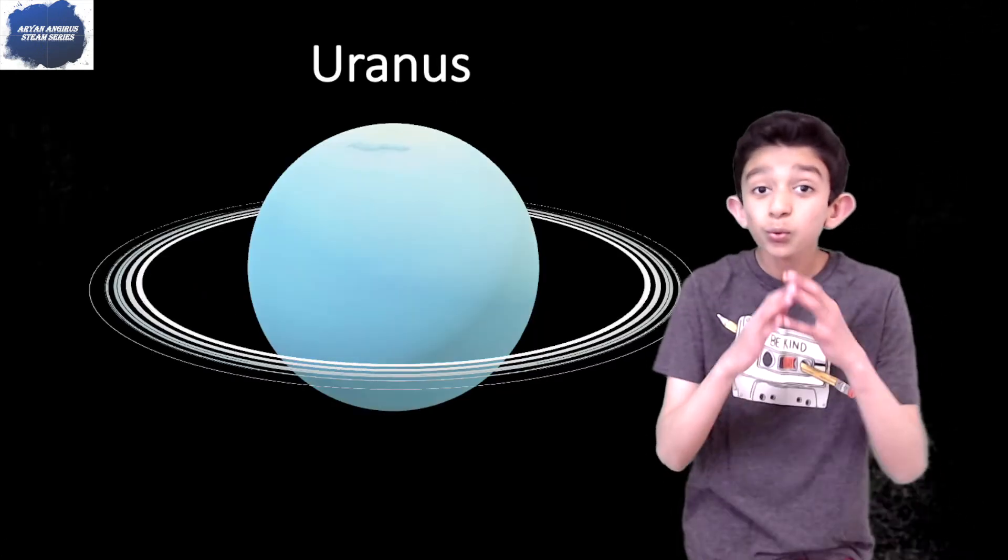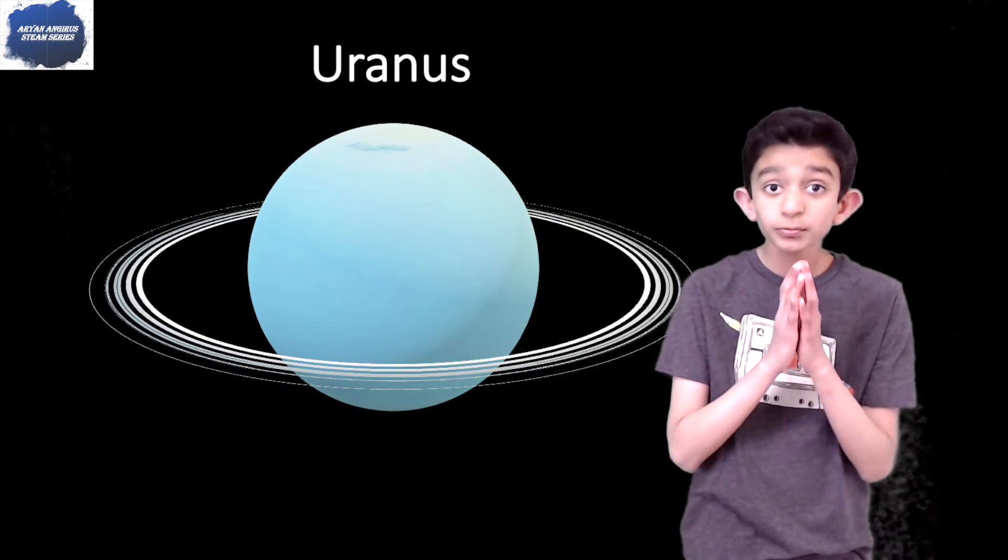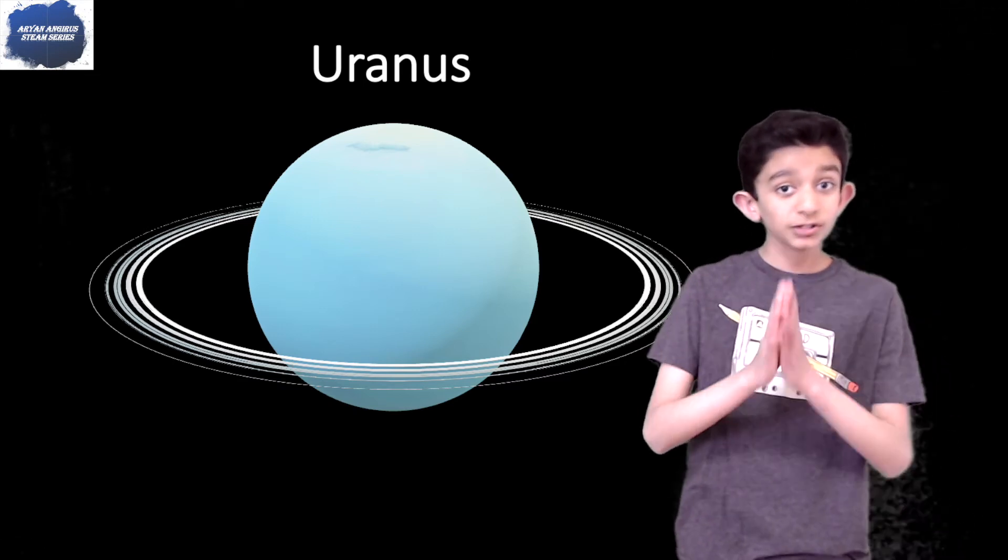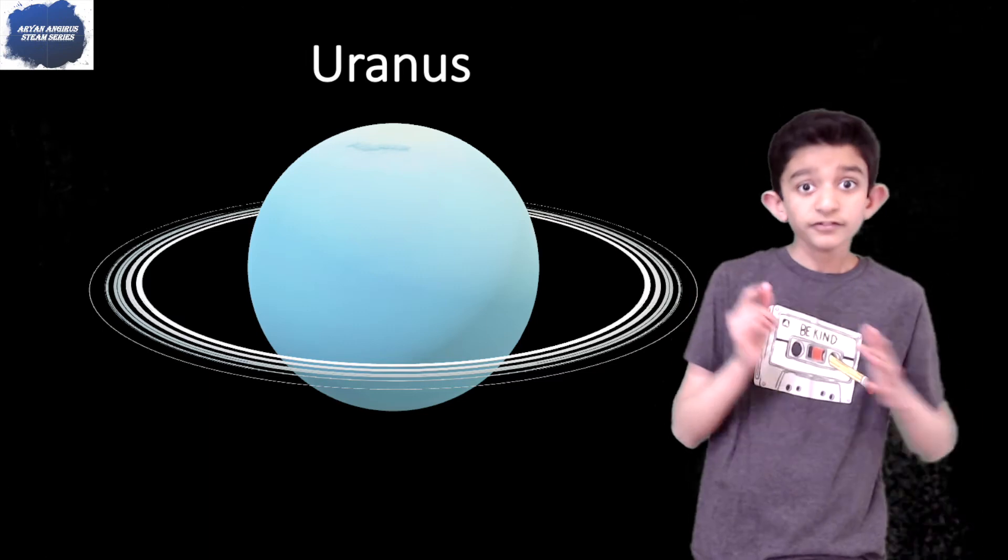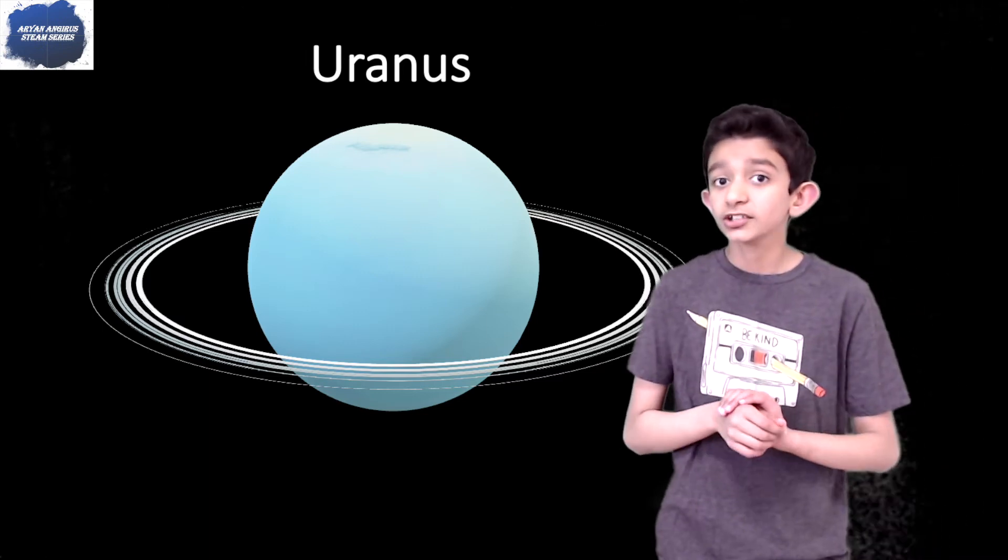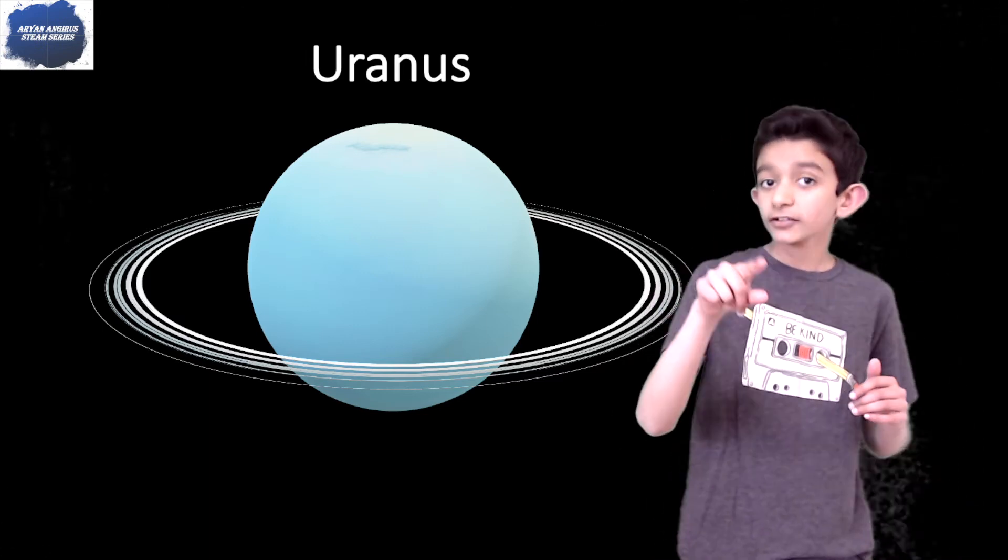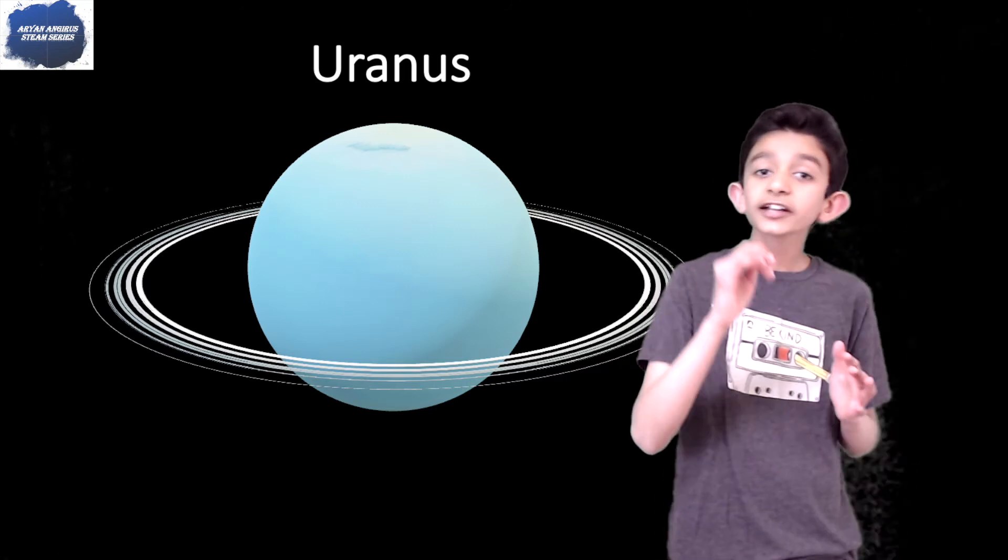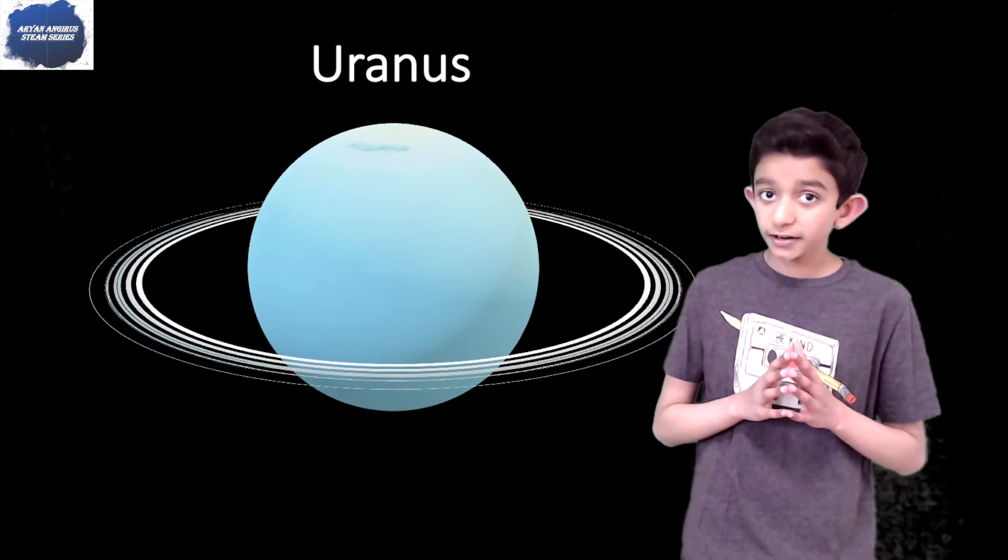Uranus has 27 known moons—not much compared to Jupiter. If you guys want to know how many moons Jupiter has, guess in the comments below, or you can check out the Jupiter and Saturn video.